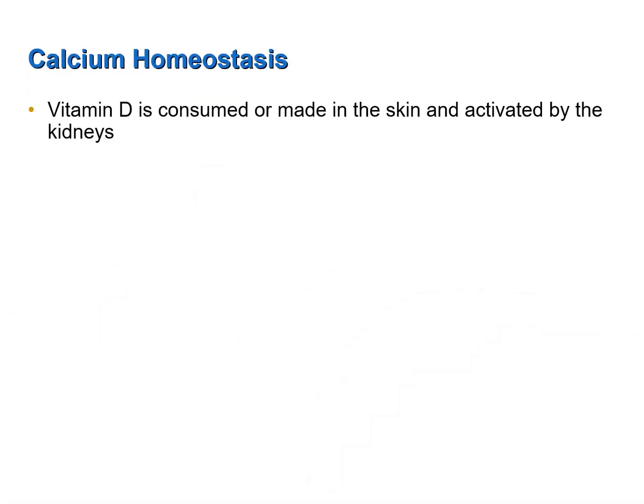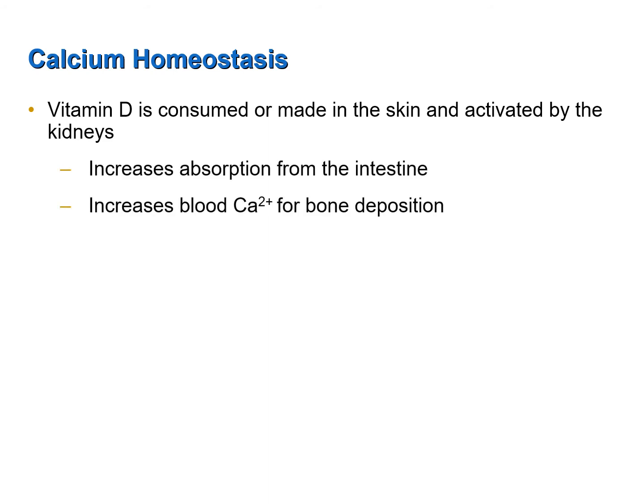Vitamin D is consumed in the food that we eat, or it is made in the skin when skin is exposed to ultraviolet light. It is then converted to a more active form by the kidneys. Vitamin D increases the absorption of calcium from the intestine, thereby increasing blood calcium levels and making calcium available for bone deposition.